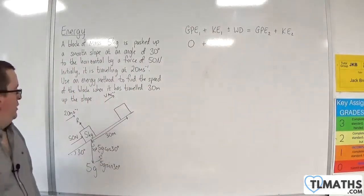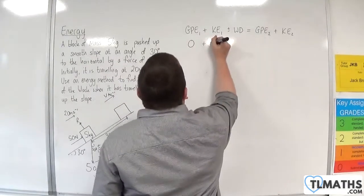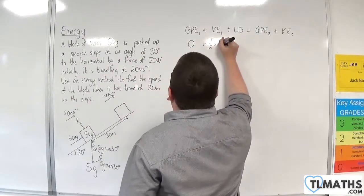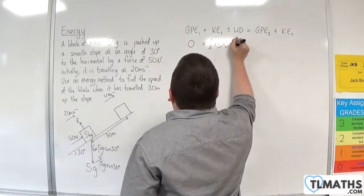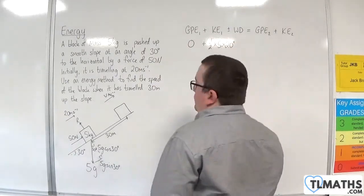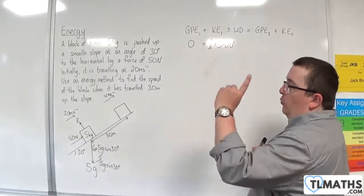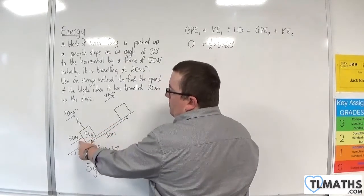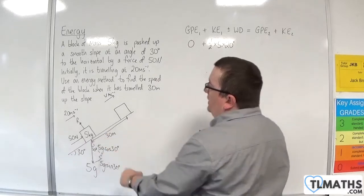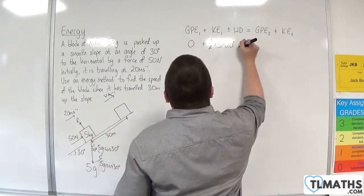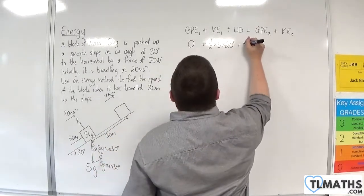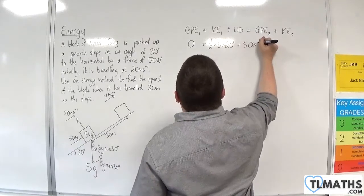The initial kinetic energy will be 1/2 times M times V squared. Then we're going to have the work done by the pushing force, which is going to be pushing it for 30 meters. It's putting energy into the system, so plus 50 times 30.